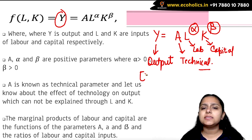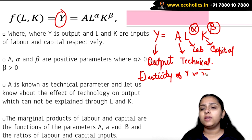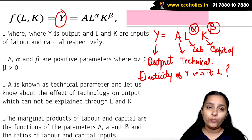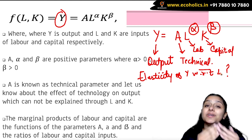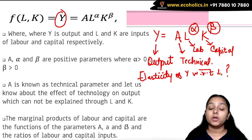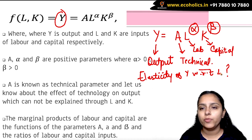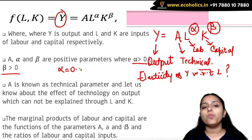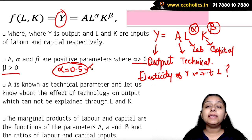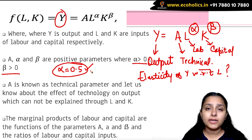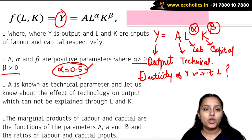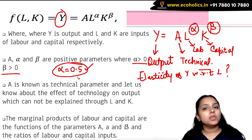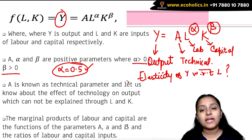Elasticity of output with respect to labor tells you the proportionate or percentage change in output whenever there is a proportionate or percentage change in L. Note that alpha and beta have to be strictly positive. For example, if alpha = 0.5, it means whenever labor changes by 1%, the output is going to change by 0.5%. So if you increase labor by 1%, the output will increase by 0.5%.